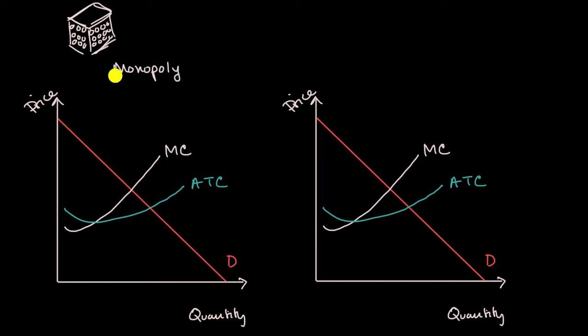You are the only player in the market, and there are very, very high barriers to entry. Now, this is a typical cost structure and demand curve for a monopoly.